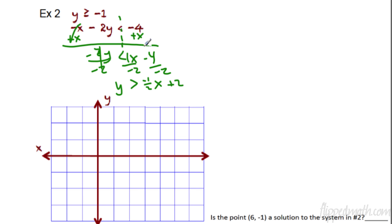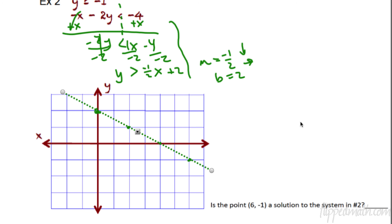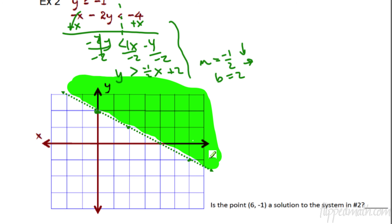So we have our two inequalities. Let's graph the second one first. M equals negative 1 over 2 — that means down 1 to the right 2. And B is equal to 2, so that's where we start. Starting at 2, I go down 1 over 2, do that a couple of times to get a nice straight line. This is definitely a dotted line because it's not equal to. So we'll put a nice green dotted line there — it might help to use different colors so you can see what's going on. The last equation here is y is greater than. Greater than is on top of the line, so when we shade, we're going to shade on top. There's y is greater than negative 1/2 x plus 2, shaded on top.